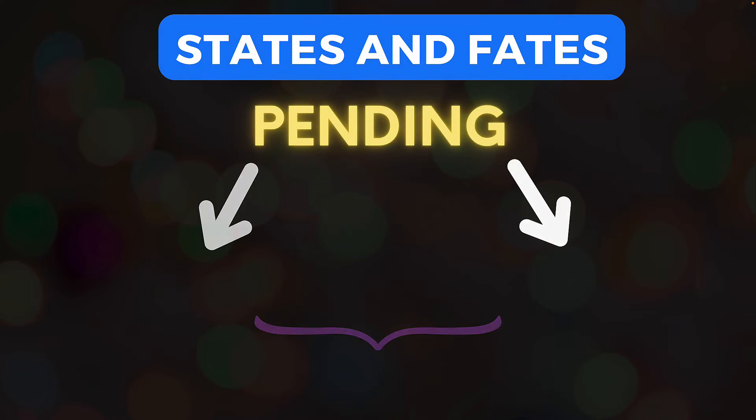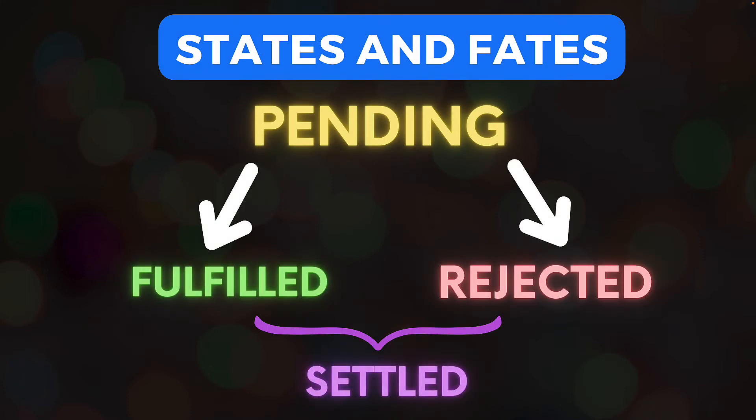So in short, a promise is simply an object that is used to manage async tasks that start off as pending and then settle with either a status of fulfilled or rejected.